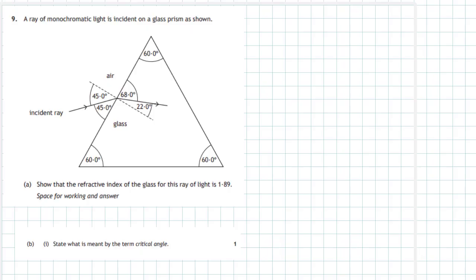Question 9 from the 2018 Higher Physics Examination, Section 2. A ray of monochromatic light is incident on a glass prism as shown. Show that the refractive index of the glass for this ray of light is 1.89. Well, almost immediately we go to Snell's law, which says that the sine of the angle in the air divided by the sine of the angle in the glass should give you a value for the refractive index.